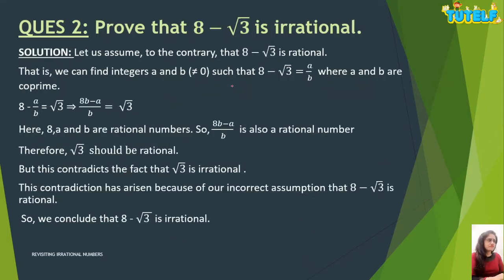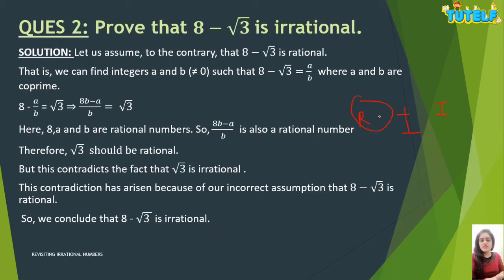Next type: you may get one rational number and a sum or difference with one irrational number, and you have to prove that it is irrational. The main problem is that students make a blunder here — they write 'we know that the sum or difference of a rational and irrational number is irrational, therefore this is irrational.' No, we don't use that concept. You have to actually prove it is irrational.